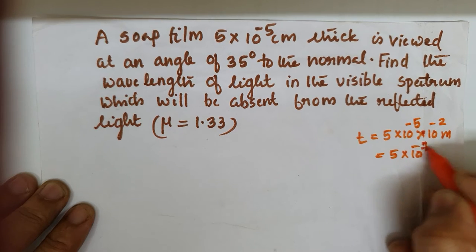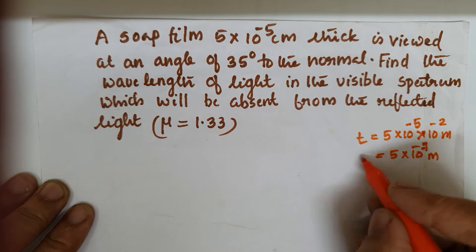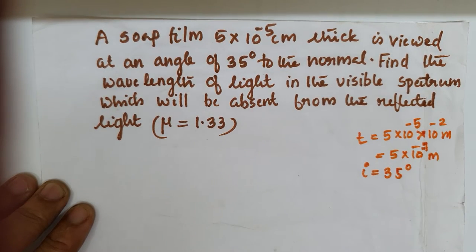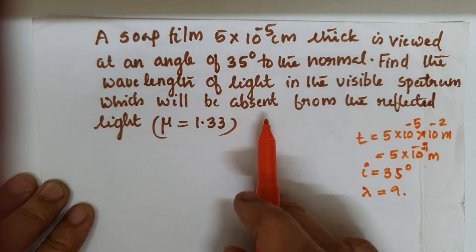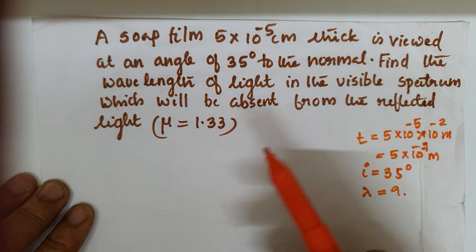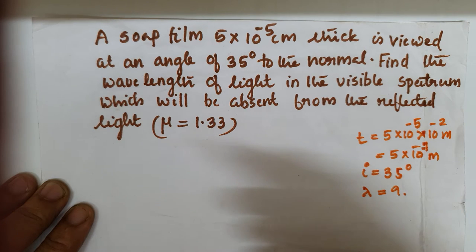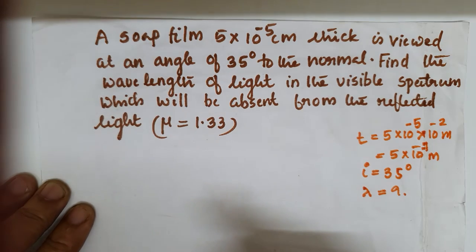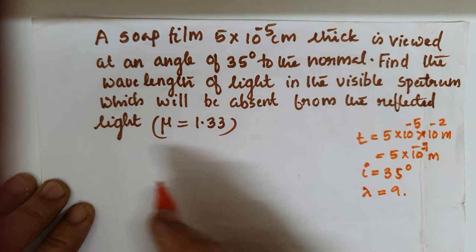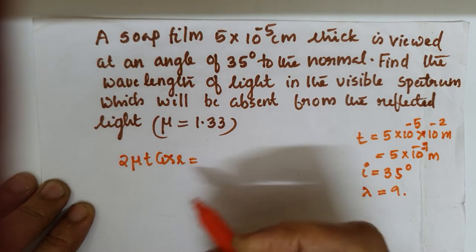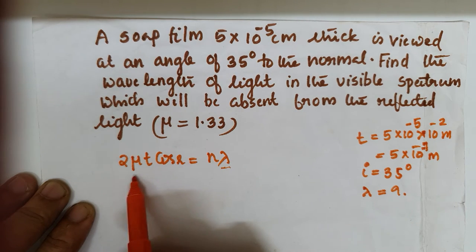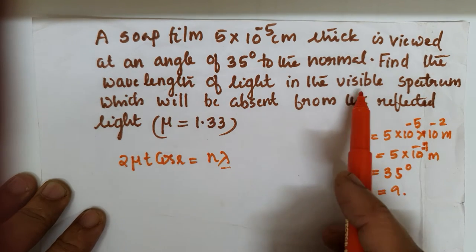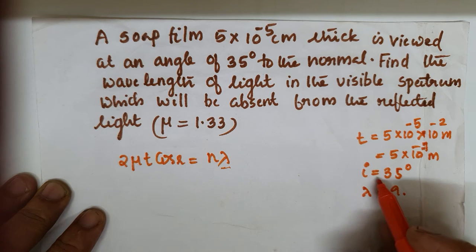The angle of incidence is 35 degrees. We are to find lambda in the visible spectrum. We use the condition for darkness, or destructive interference, since the absent light satisfies that condition. The condition for destructive interference is: 2 mu t cos r equal to n lambda. We need to find wavelengths satisfying this condition, then check if they lie in the visible region. Here i is equal to 35 degrees.